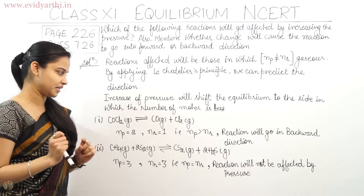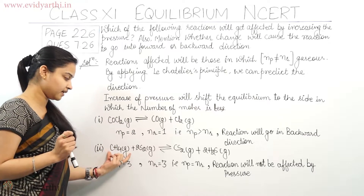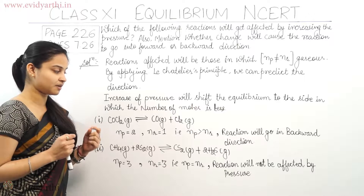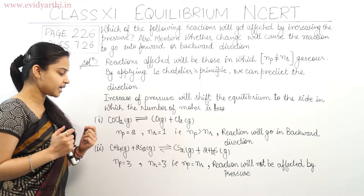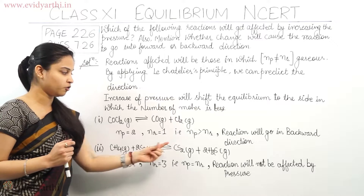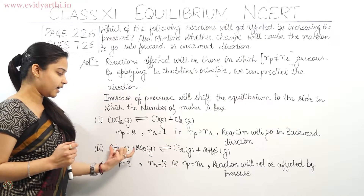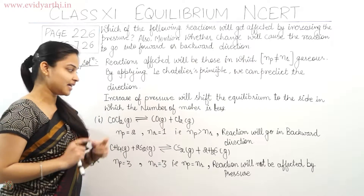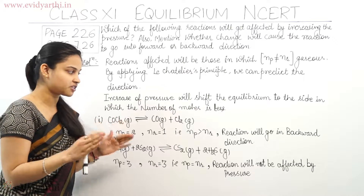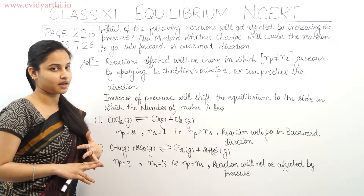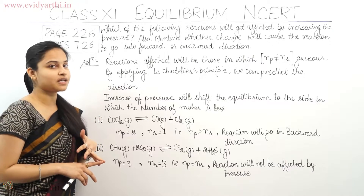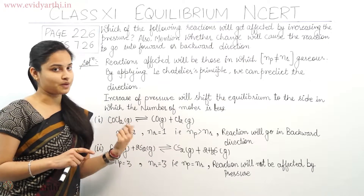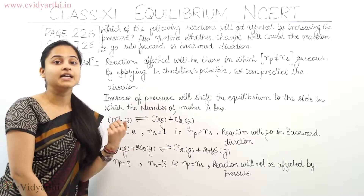The second reaction is CH₄(g) + 2S₂(g) in equilibrium with CS₂(g) + 2H₂S(g). The number of moles of the product is 3, and the number of moles of reactant is also 3. Since Np equals Nr, the reaction will not be affected by the increase in pressure. The reaction is only affected when Np is not equal to Nr; here Np equals Nr, so the reaction won't get affected.